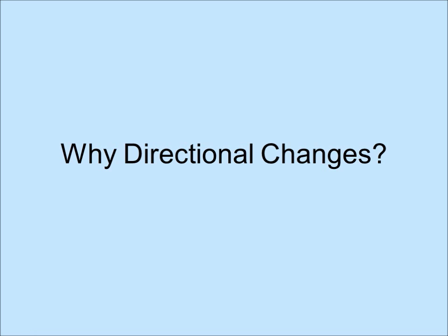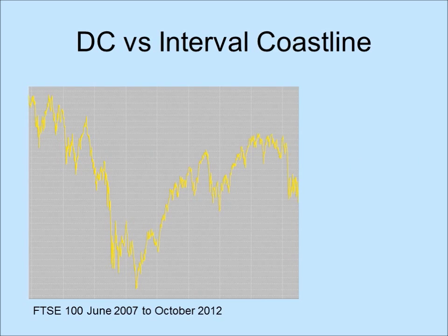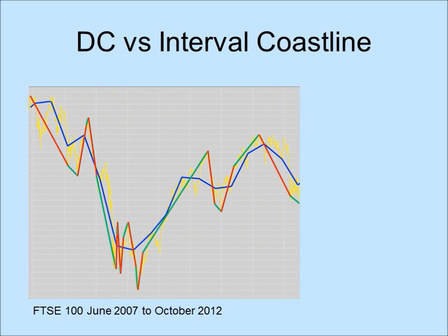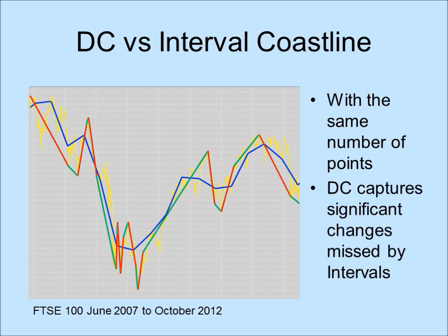Why is it useful to look at directional changes? Suppose we summarize the price movements with the same number of points in an interval-based summary and a directional change-based summary. By definition, the latter will capture all the extreme points. It will also use more points to summarize periods in which more directional changes took place, whereas interval-based summaries will sample prices uniformly over the period.